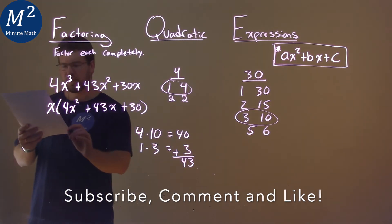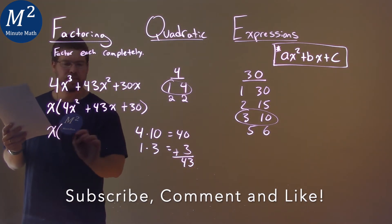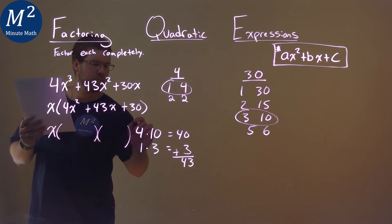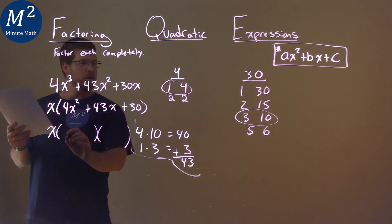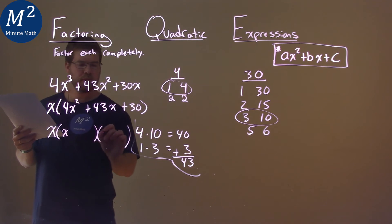So how do we write this out? Well, x has to be here, and we still have to write it in a factored form. Let's put 1x here, and then this one will be a 4x.